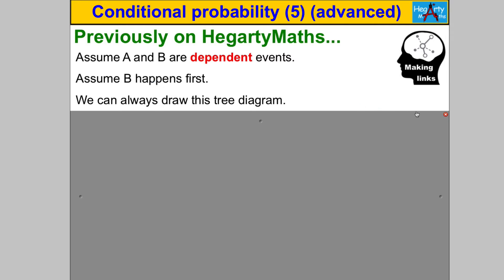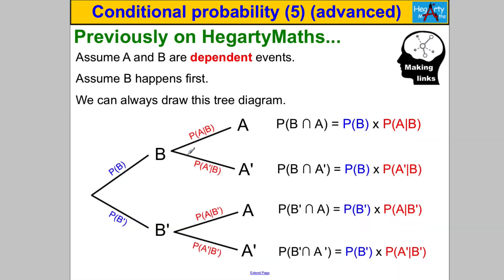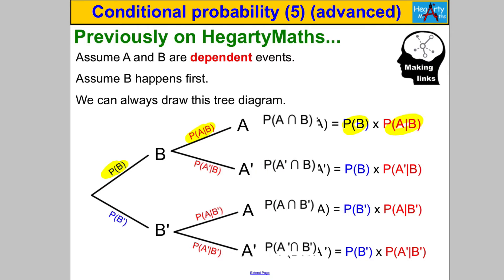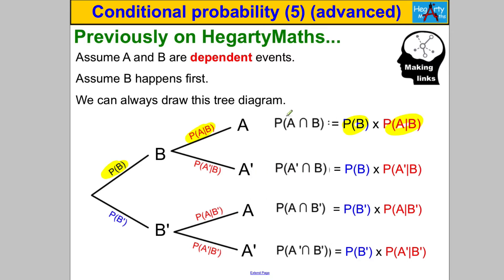We could also do it the other way around and make B happen first. You get exactly the same idea, and multiplying along the branches gives P(A∩B) = P(B) × P(A|B). Note that P(B∩A) is the same as P(A∩B) — the order doesn't matter for the intersection. So: P(A∩B) = P(B) × P(A|B), which makes sense if B happens first.